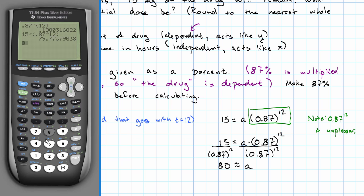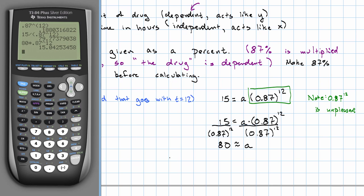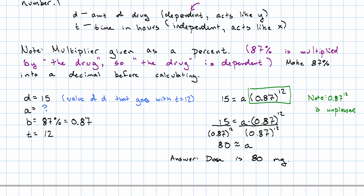To make sure that worked, 80 times 0.87 to the 12th. That really is very close to 15. So, our answer is that the initial dose should be 80 milligrams.